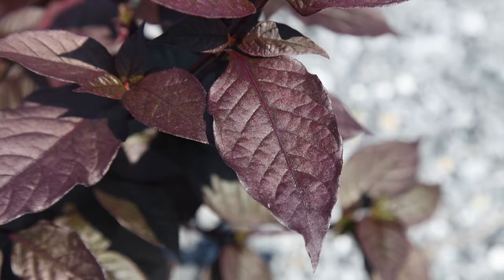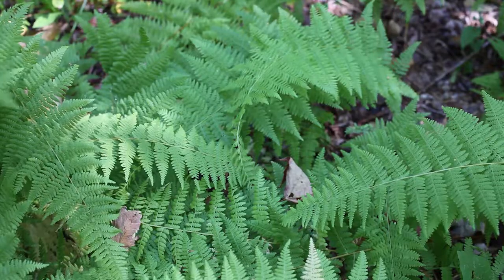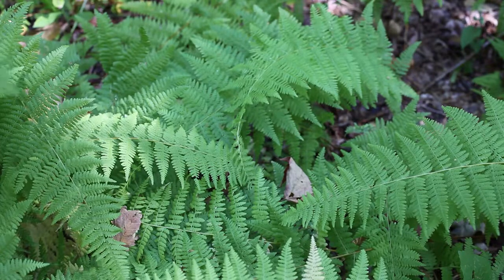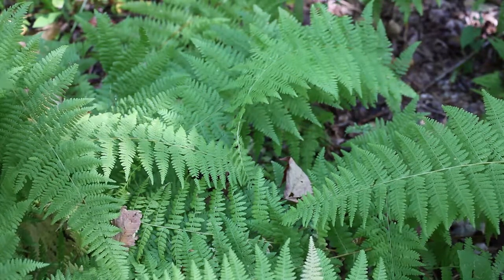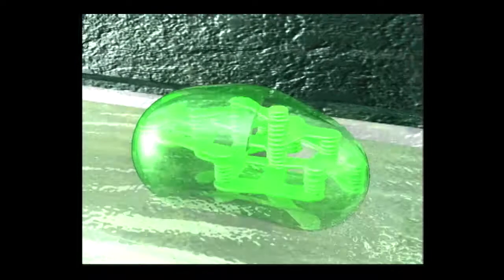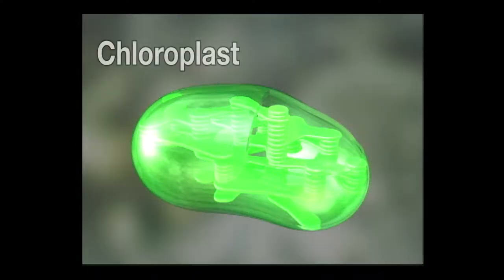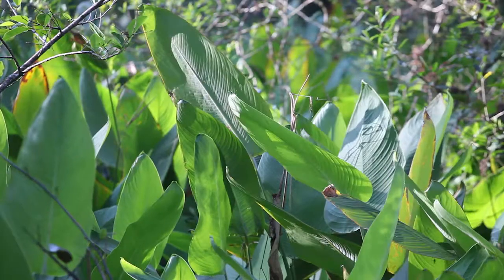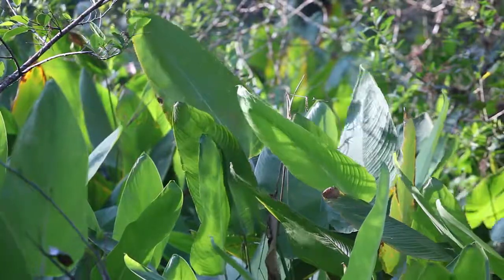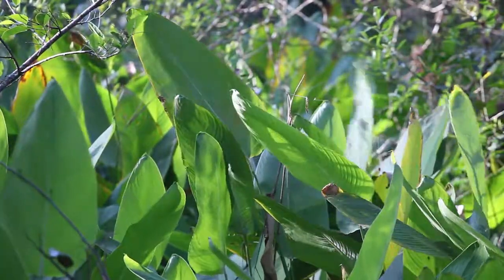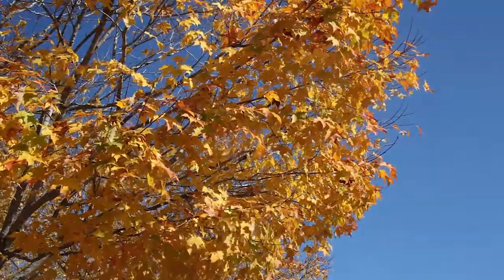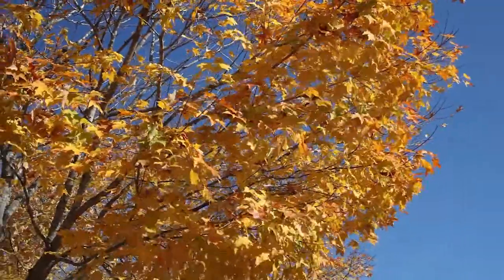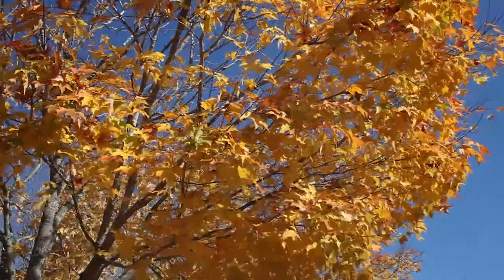While not all plants have green leaves, the vast majority of them are green. The process of photosynthesis occurs within structures called chloroplasts, which are located inside plant cells. Chloroplasts contain a green product called chlorophyll, which plays a vital role in trapping the sun's energy. Chlorophyll causes the dominant green color seen during the plant's growing season. But when the growing season winds down, green chlorophyll becomes less visible, and other colors in plant cells emerge.